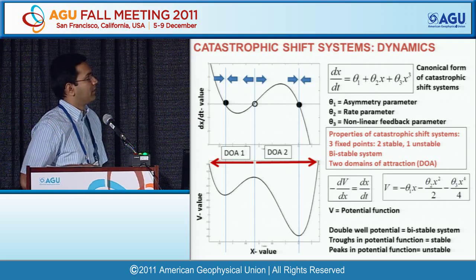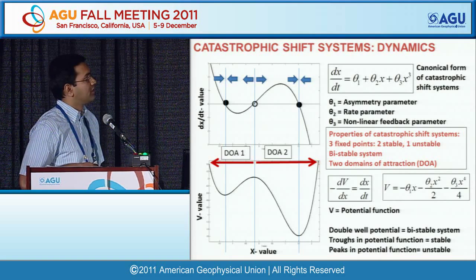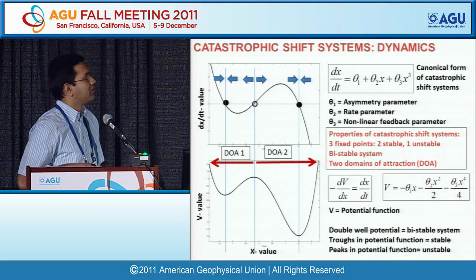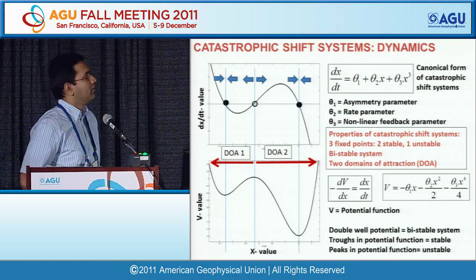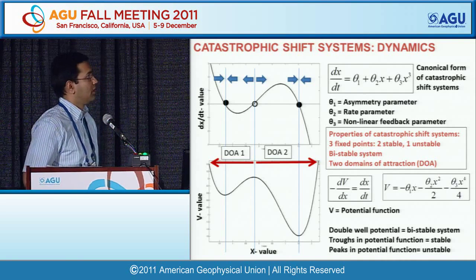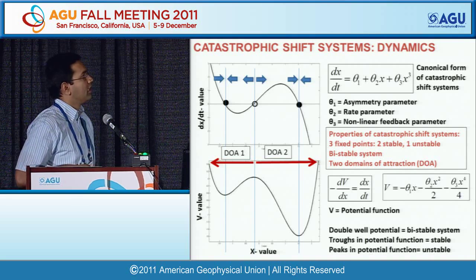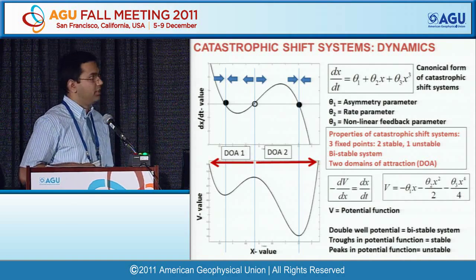Looking at the stability of these fixed points: if you push the particle from the center point to the right, the velocity dx/dt is positive, so it moves away to the right. If you push it to the left, dx/dt is negative, so it moves left. The center point — the open circle — is an unstable fixed point; it repels things away. The two outer points are stable fixed points — attractors — that things converge toward. Whenever you start to the left of the unstable point, you reach the left stable point; whenever you start to the right, you reach the right stable point. These are called domains of attraction.